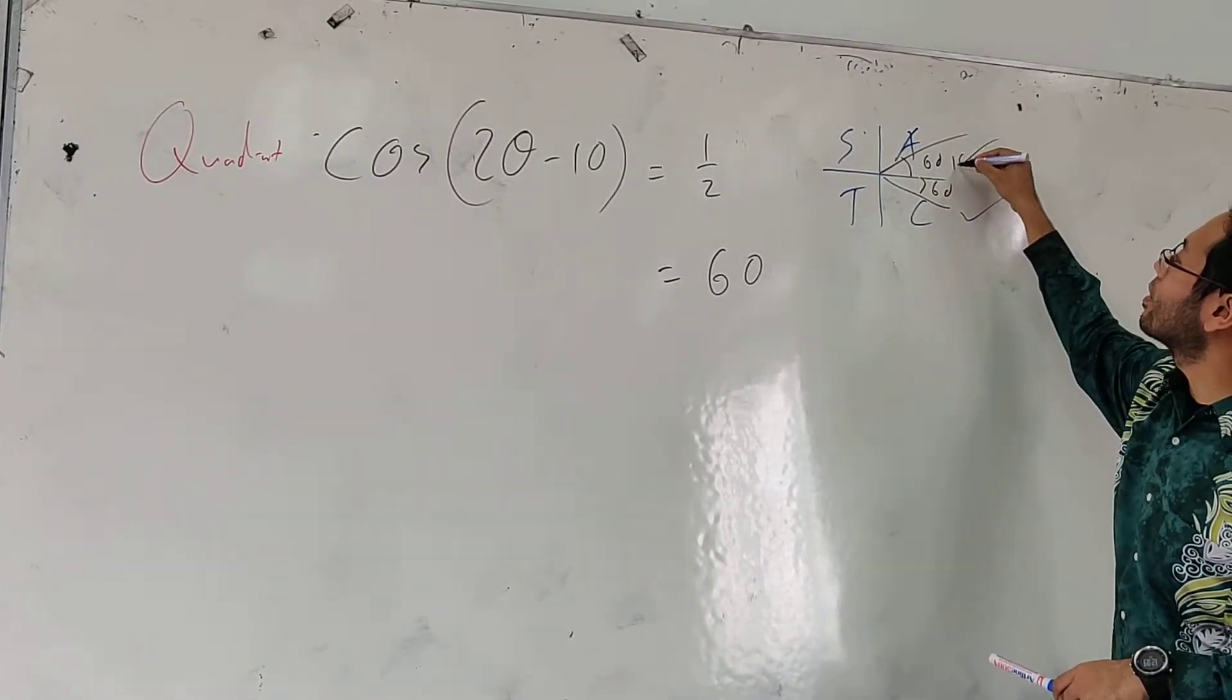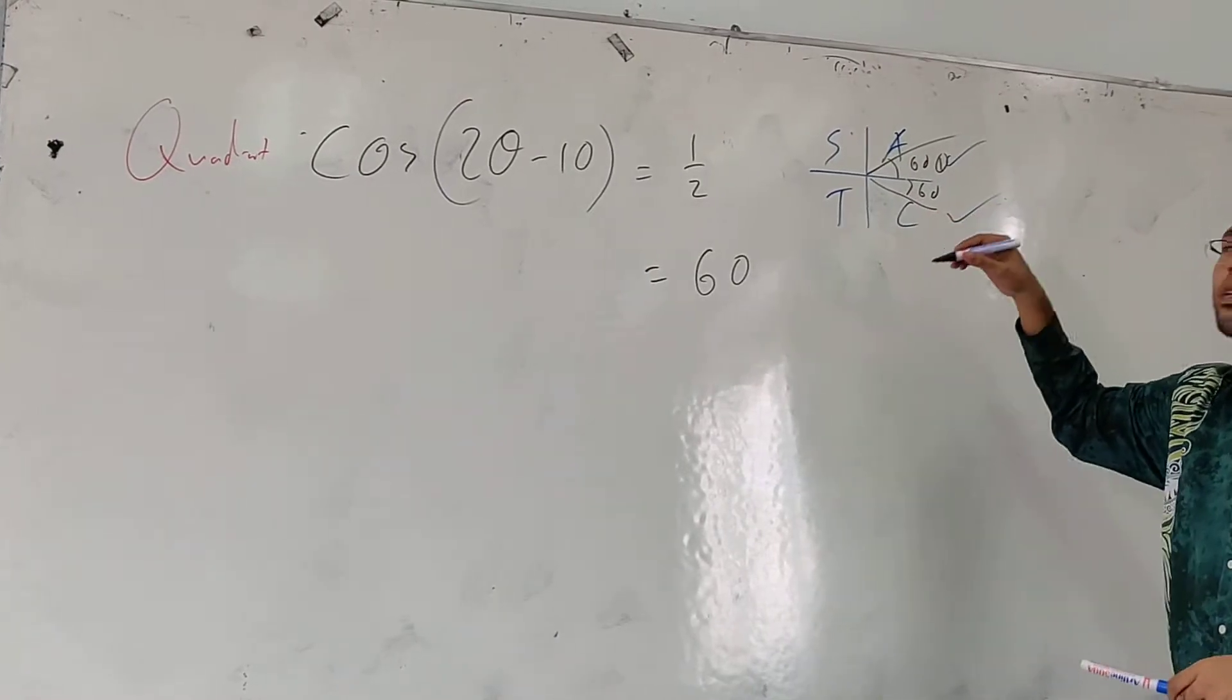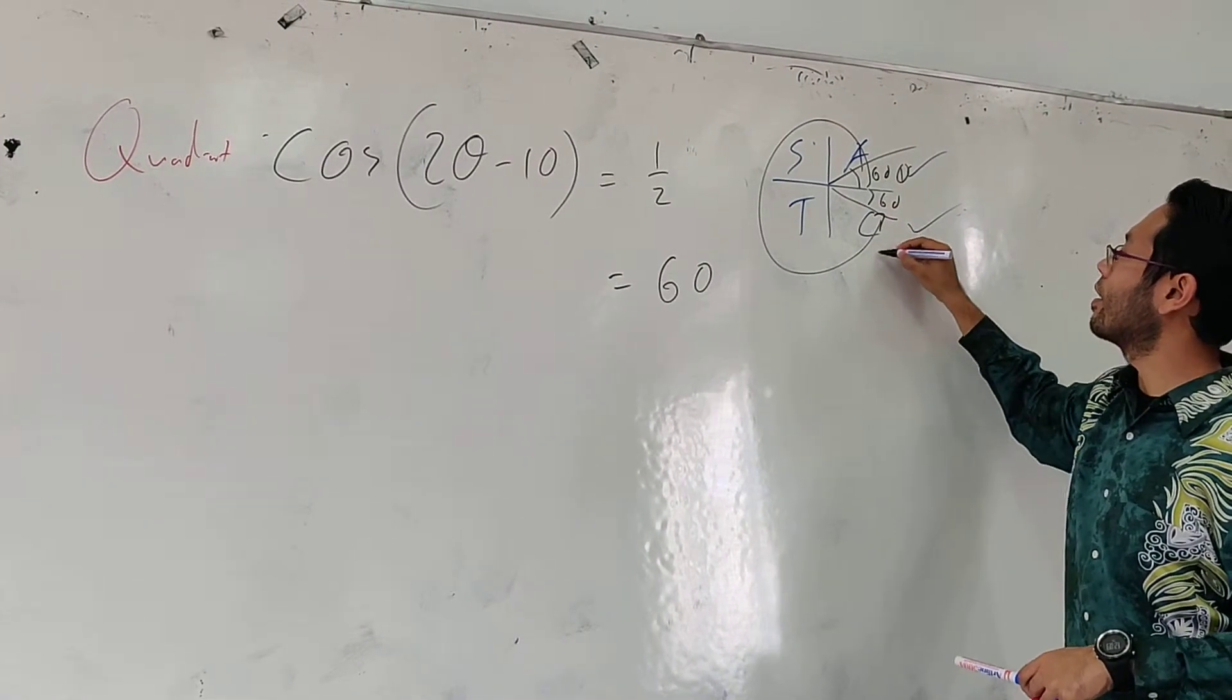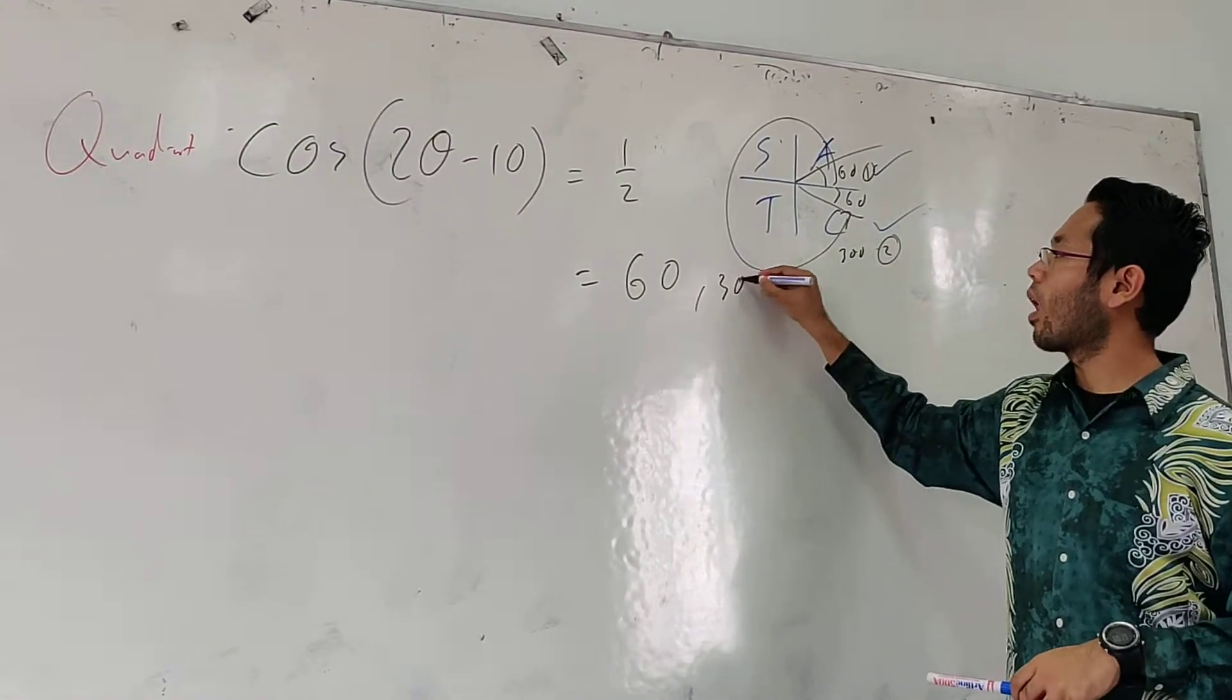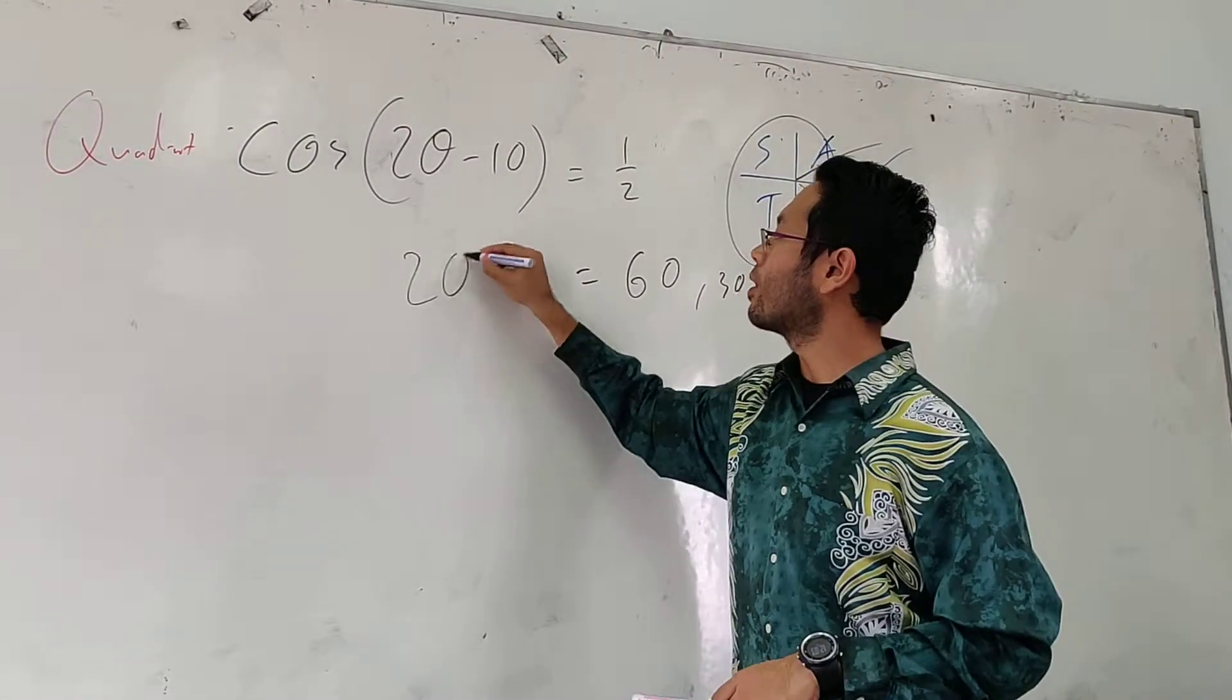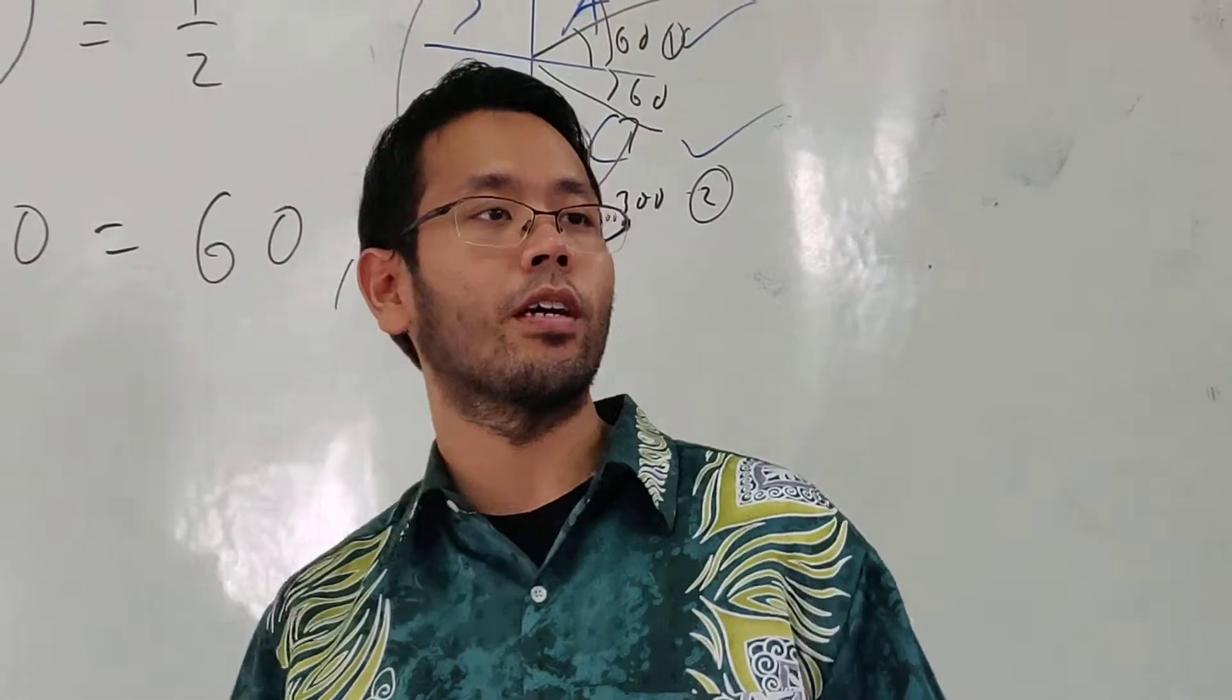So the first one is over here. The second one is? 300. Okay. 300. 2 theta minus 10. Just shift course for pressing your calculator. You okay?